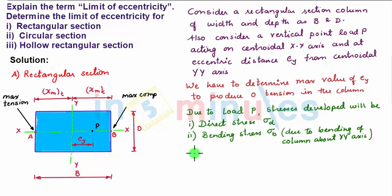Let us consider point A. The total stress or resultant stress at point A is given as sigma A equals the direct stress, which is the compressive stress due to load P, minus sigma max of T due to bending about YY axis. This is by considering compressive stress as positive and tensile stress as negative.